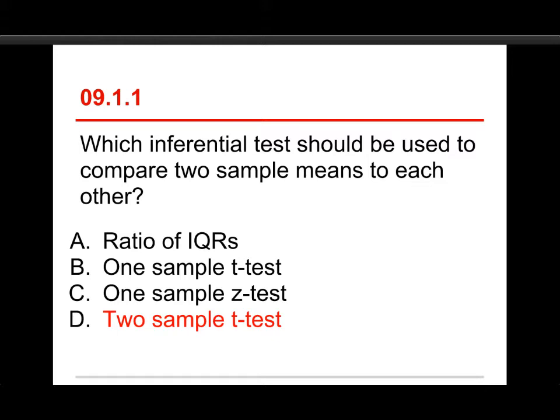Now, let's just take a look at the wrong answers. A ratio of IQRs, interquartile ranges, I can imagine there might be situations where that would be relevant, but it's nothing that we're ever going to cover in this class. A one-sample t-test is for comparing one sample mean to a population mean when you don't have the population standard deviation. A one-sample z-test is for comparing one sample mean to a population mean when you do have the population standard deviation. The only one that allows you to compare two sample means to each other is the two-sample t-test.